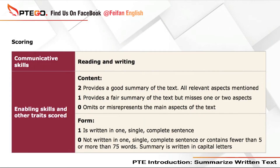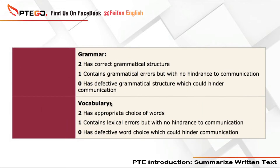From the scoring point of view, the number one criterion is content — what you are going to write. If you write a perfect sentence with all the relevant aspects from the passage, you'll get two marks; otherwise one or zero. The form is simple: it should be one complete sentence starting with a capital letter and ending in a full stop. You can use other punctuations in between, but it must not go beyond 75 words or you will get no score. For grammar and vocabulary, you should use correct grammatical structure; you may use keywords from the passage, but incorrect vocabulary will result in deduction of marks.